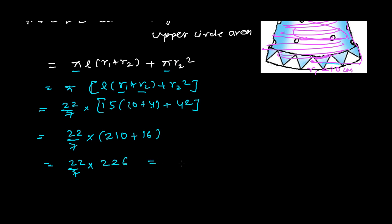Let's multiply 226 × 22 = 4972. Now divide by 7: 4972 ÷ 7 = 710.285 square centimeters.